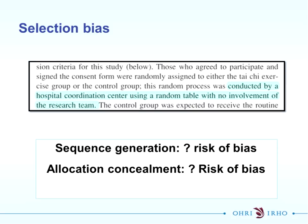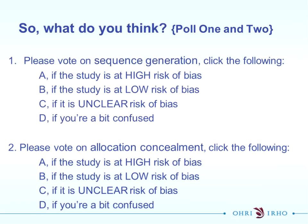Looking at the example, the text under the Methods section details that the randomisation process was conducted by a hospital coordination centre using a randomised table with no involvement of the research team. It's now time for a poll - we'll do two polls: the first for sequence generation and the next for allocation concealment. If you think it's high risk of bias please click A, low risk B, C for unclear, and D if you're a little unsure.